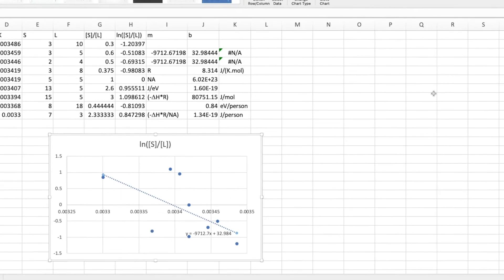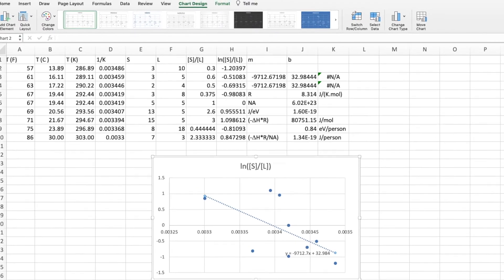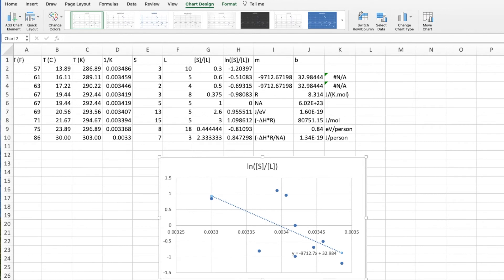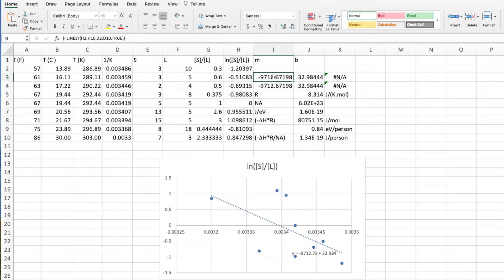You can do this directly on the graph, but using the statistics functions usually gets more accurate results. Here cell i3 shows the slope and cell j3 shows the intercept.